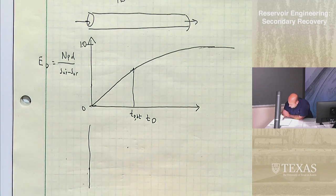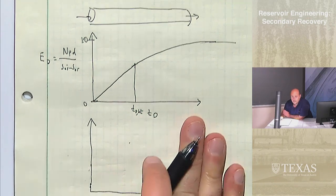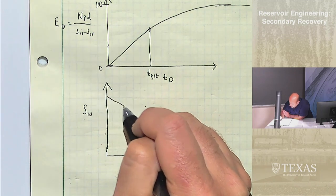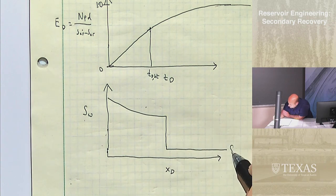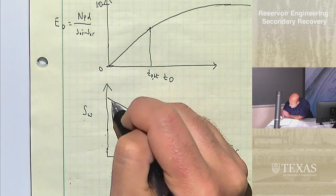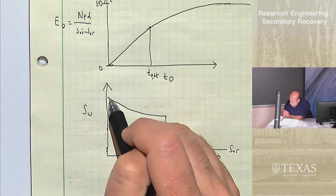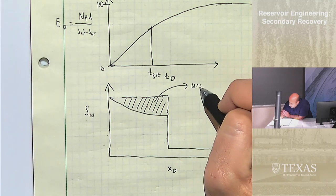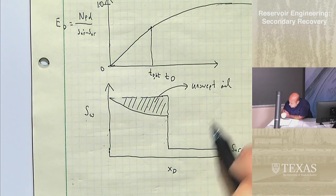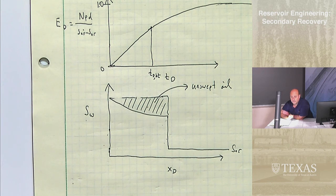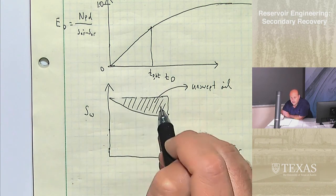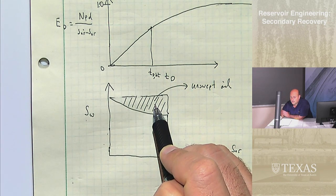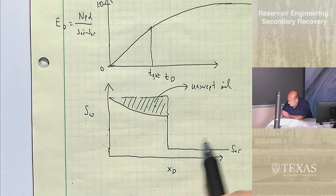It's related to the fact that if we were to plot SW versus distance, we know that we usually get something like this. This is SOR, but this is my moving wall, but we leave behind oil. Even at breakthrough, you're going to have some unswept oil behind there. That's why ED is less than one. If we didn't have this, then ED would be one, at least after breakthrough.